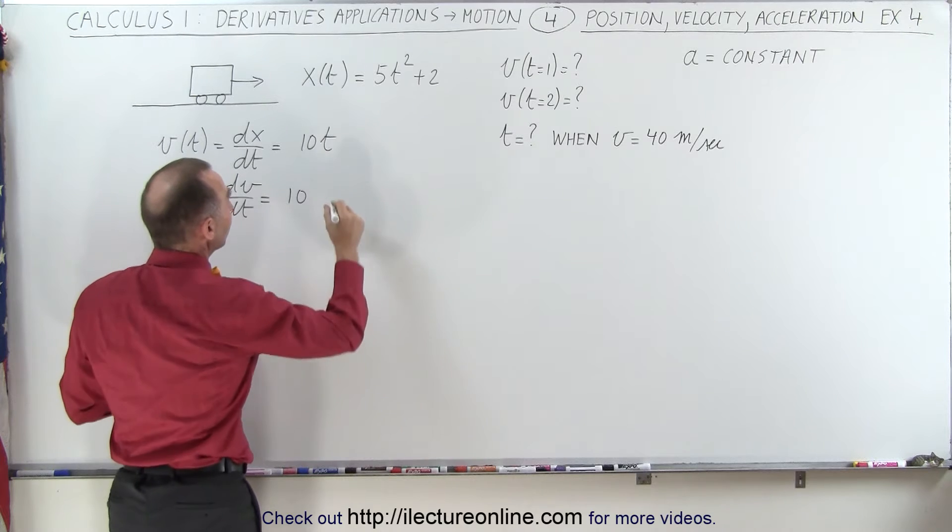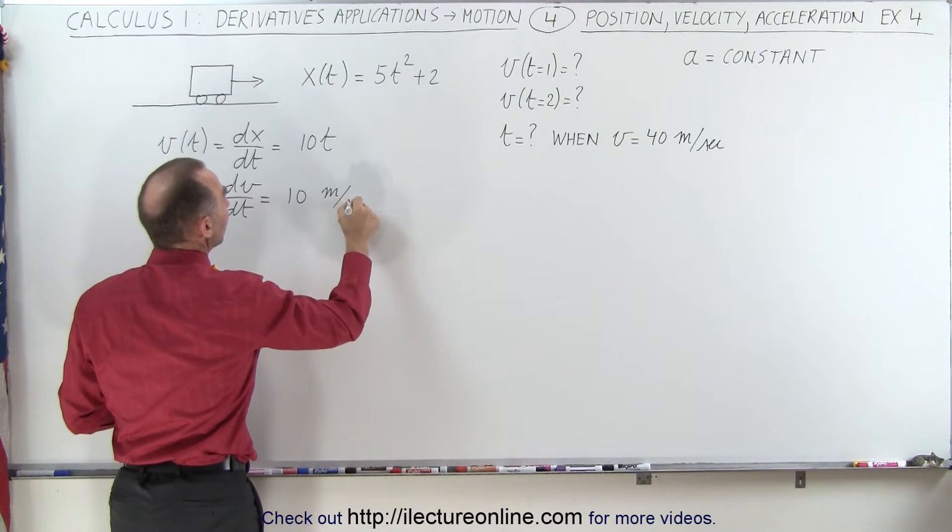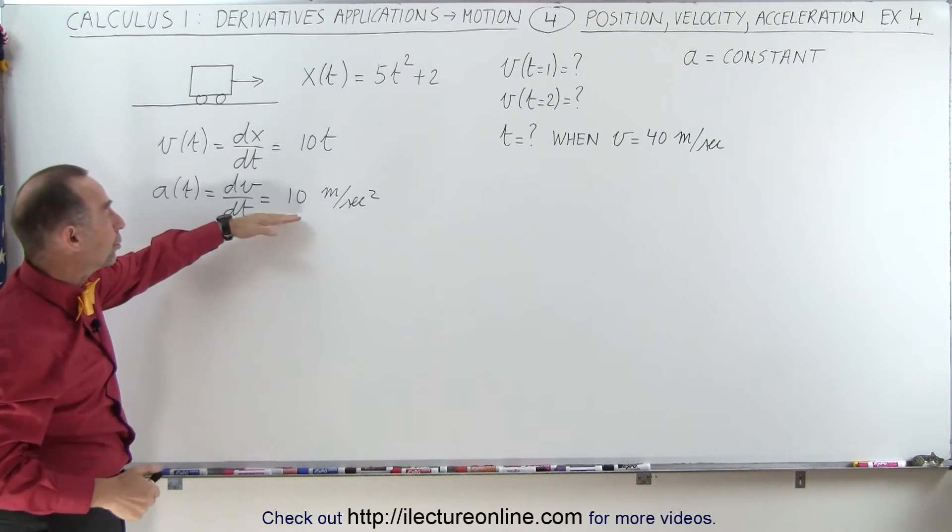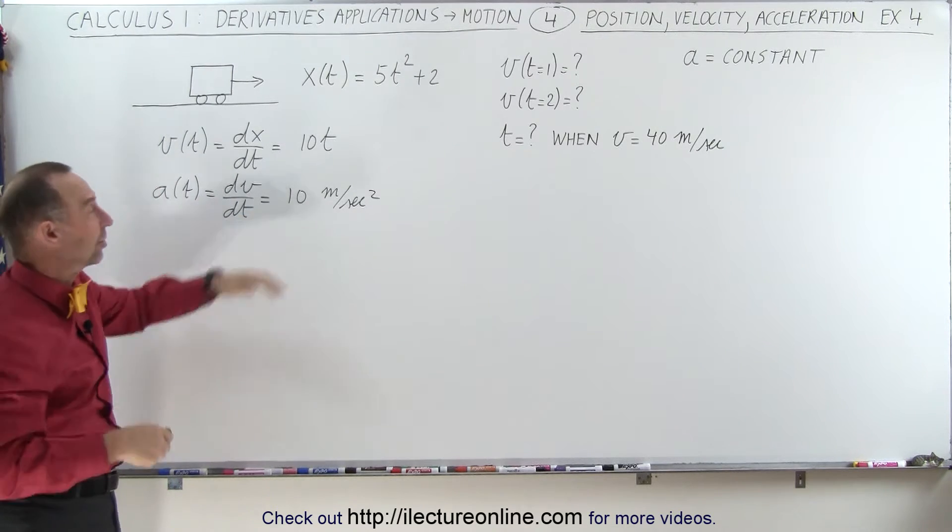And assuming we're using standard units, this would be 10 meters per second squared, which means that every second, the object will move 10 meters per second faster than the second before.